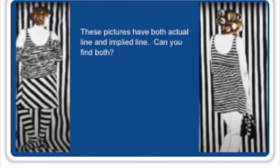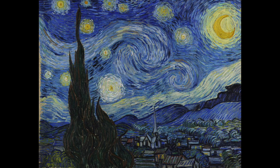Study these pictures for a moment and see if you can find both implied and actual line. This is a famous painting called Starry Night by Vincent Van Gogh. He included both actual line — look at the buildings and the tops of the hills — and implied line. Take a look at the sky. Can you see what he implied?